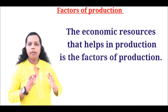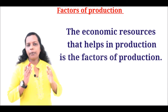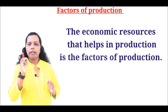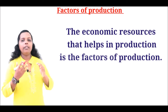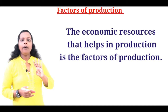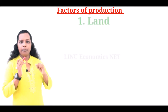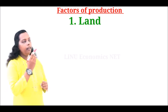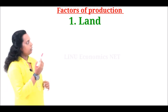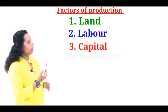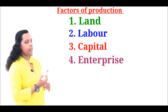Another name for factors of production is economic resources. There are four types of factors of production: number one, land; second one, labor; third one, capital; fourth one, enterprise.